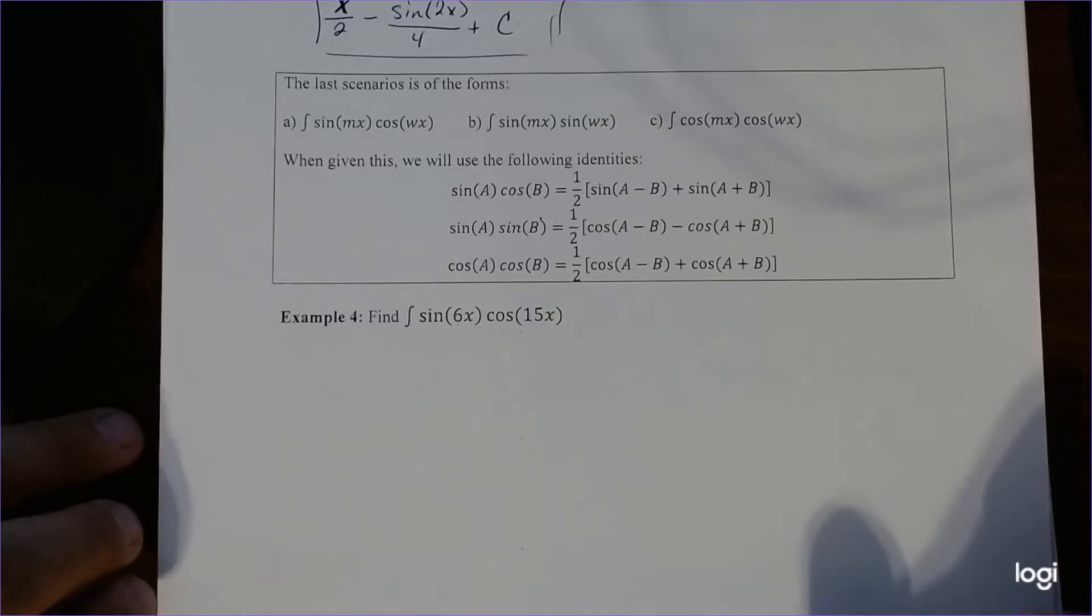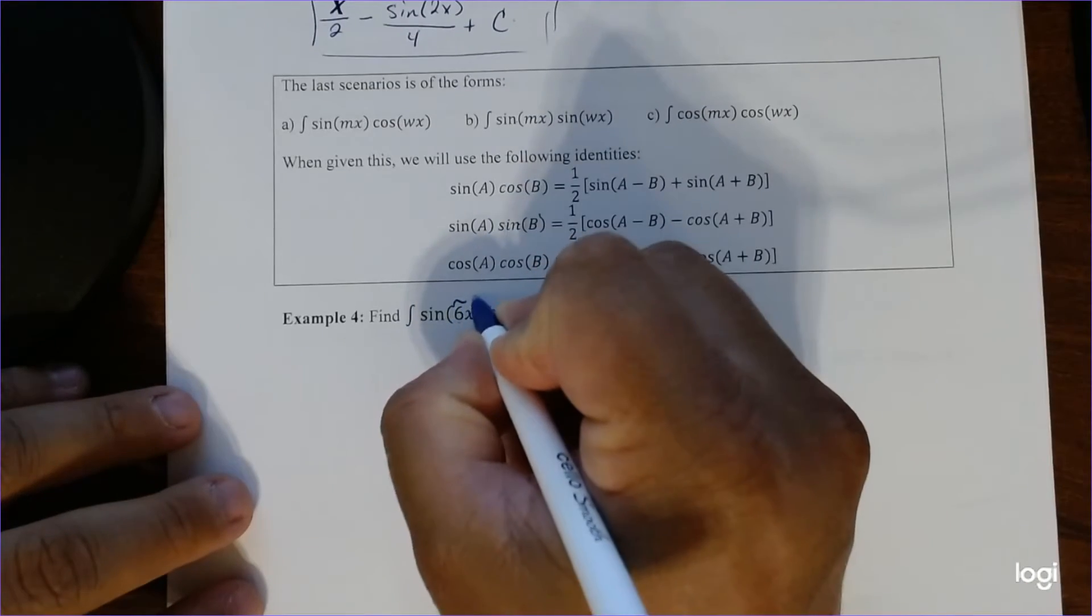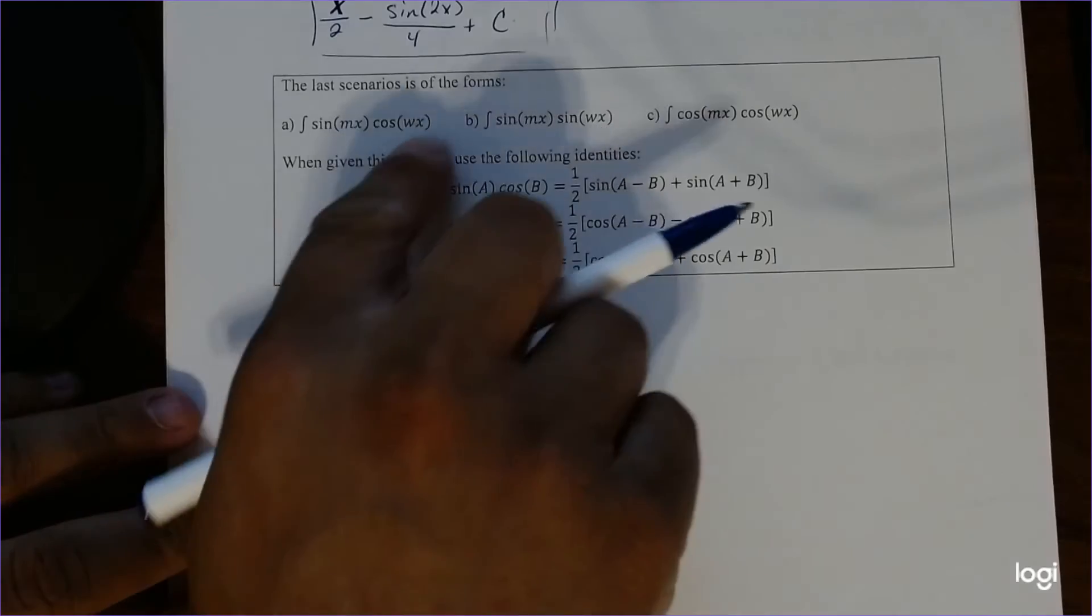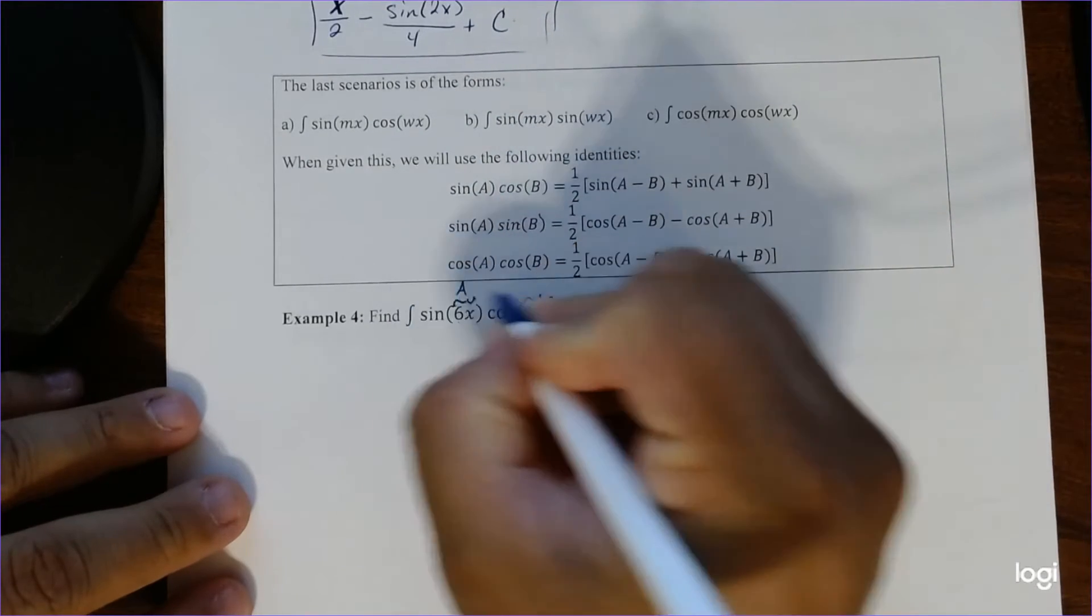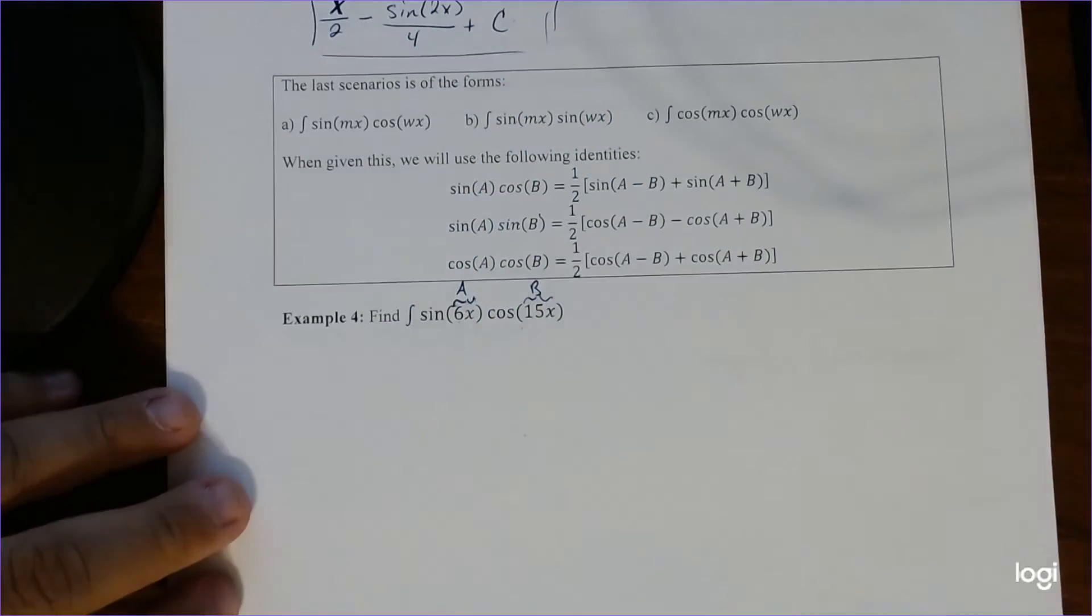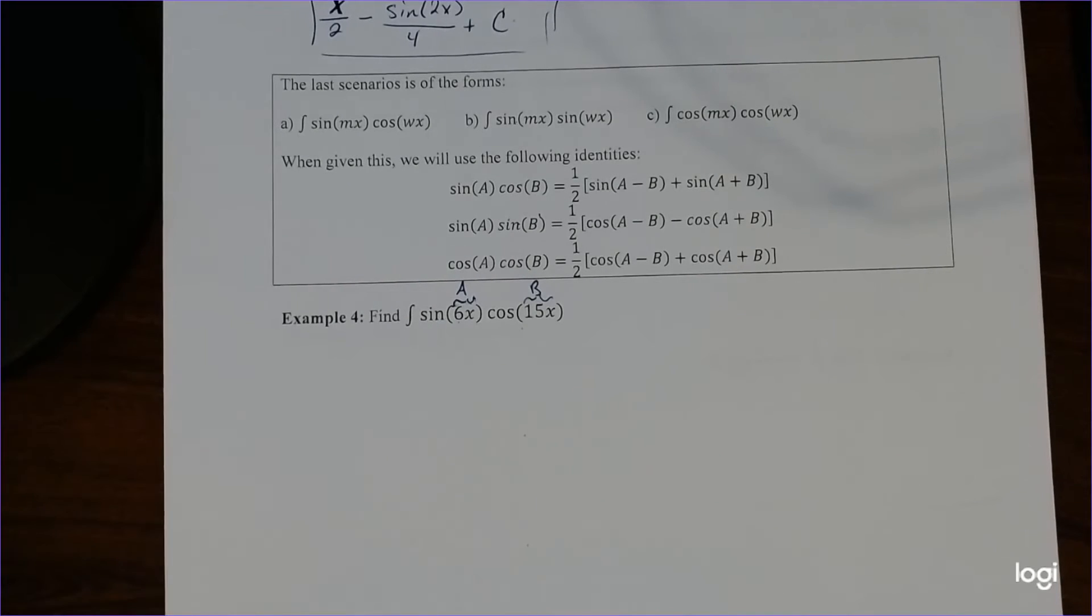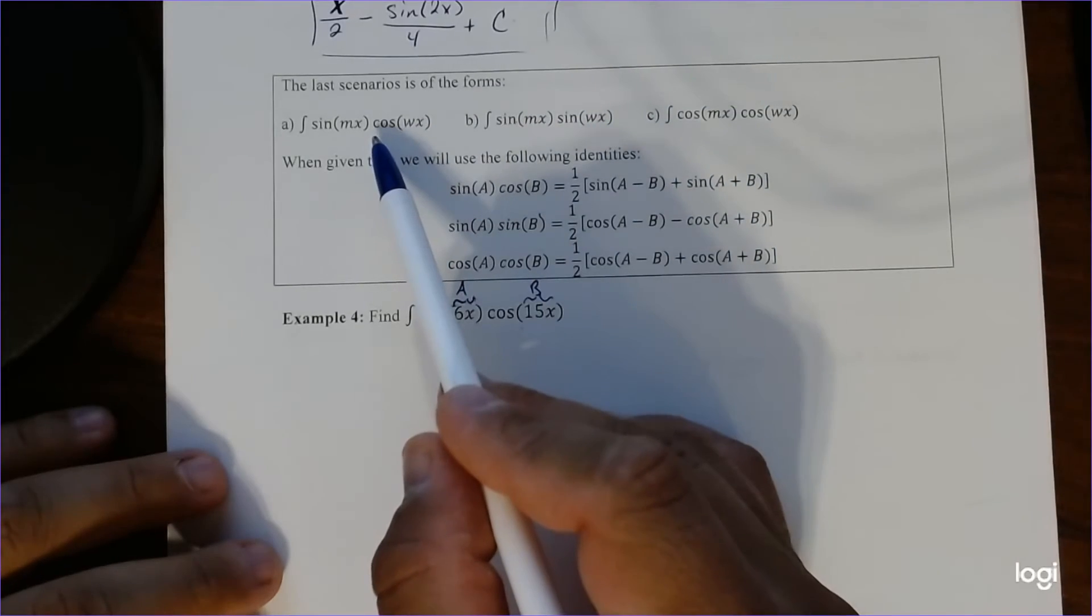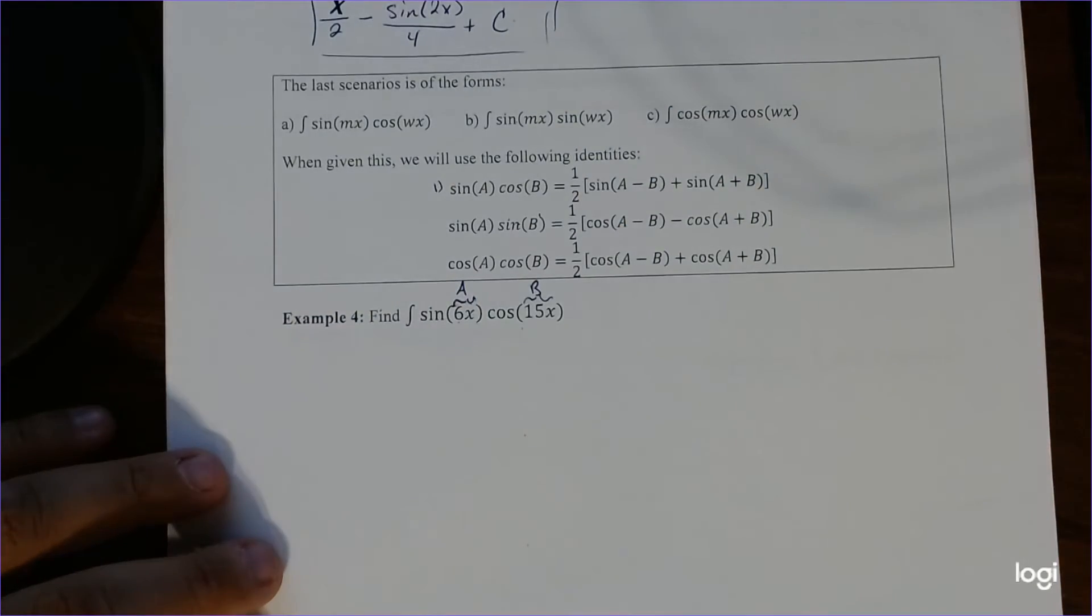So let's try this one out so you can see how this will work out. So we want to take the integral of sine of 6x, cosine of 15x. So in our scenario here, this is going to be A, and this is going to be B. The whole 6x, not just the value of 6. So we have sine, cosine. So we're actually in this scenario. So we're going to be using the first property here, sine, cosine.